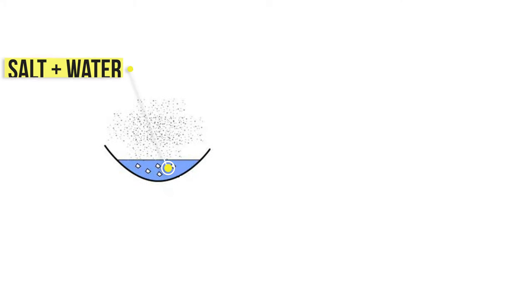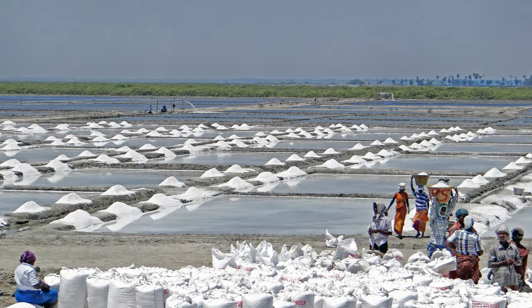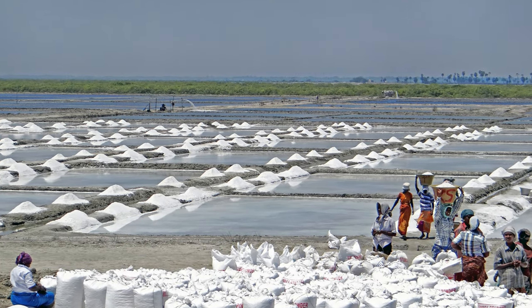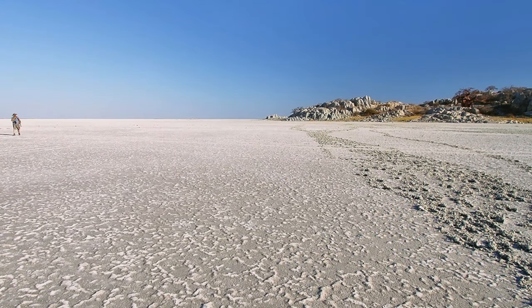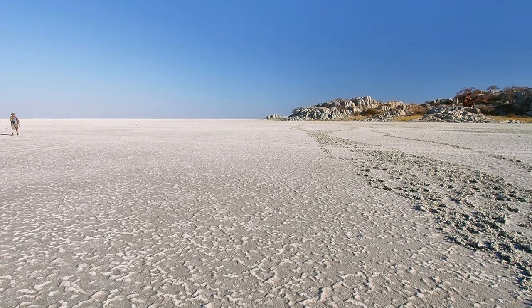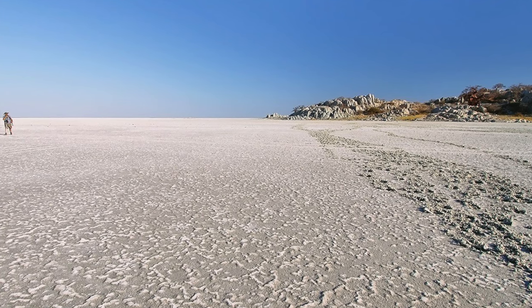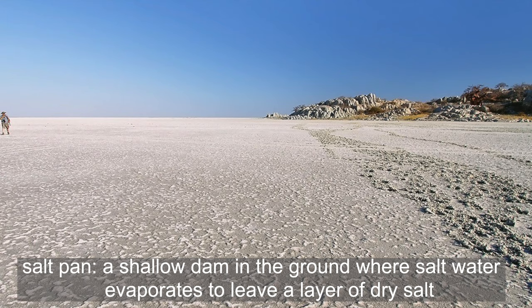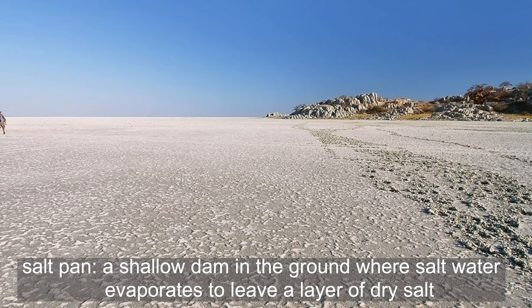An example of this is a salt and water mixture where the water can be evaporated in order to leave the salt behind. Did you know that most of the salt that we use come from South Africa? South Africa gets its salt from inland salt pans, coastal salt pans, and seawater by using the evaporation process. A salt pan is a shallow dam in the ground where salt water evaporates to leave a layer of dry salt.